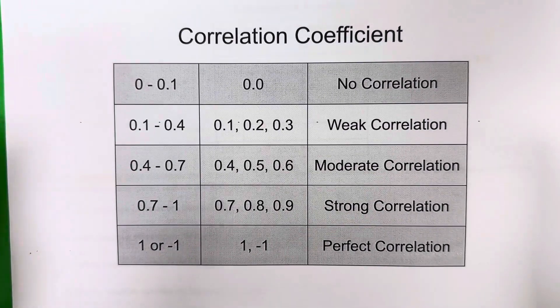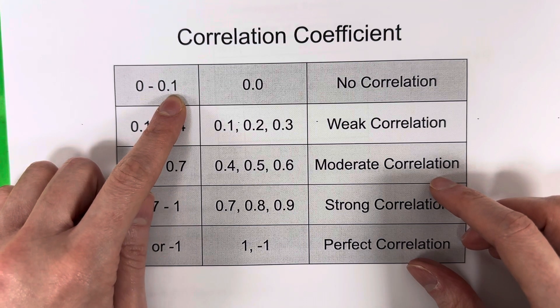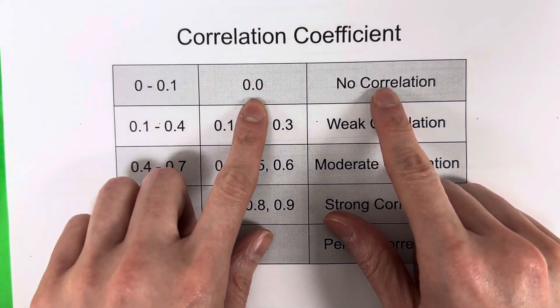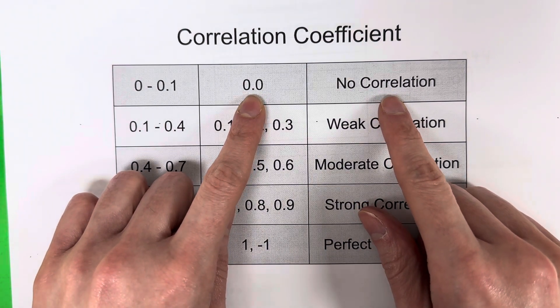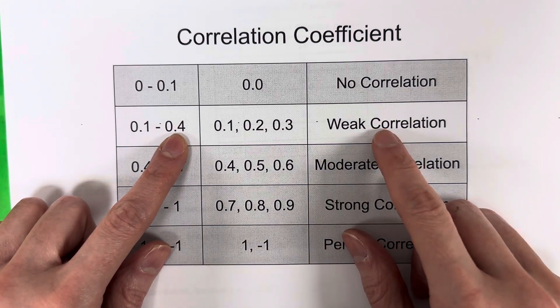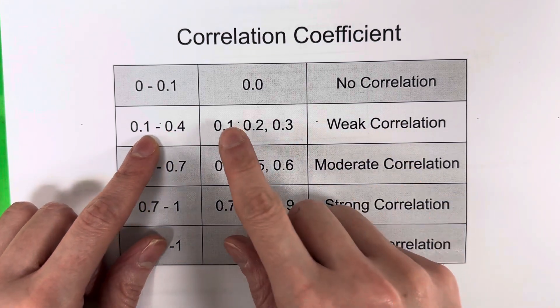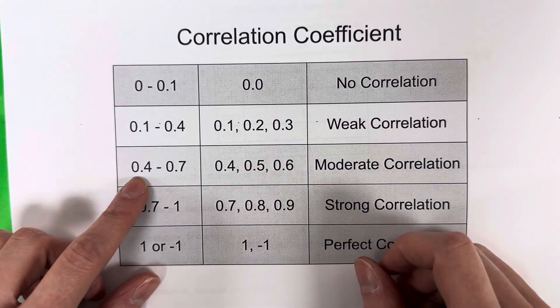All right. So numbers between 0 and 0.1 are no correlation. That would be numbers like 0.01, 0.02, 0.03, etc. Numbers between 0.1 and 0.4 are a weak correlation. So those numbers would be 0.1, 0.2, or 0.3.